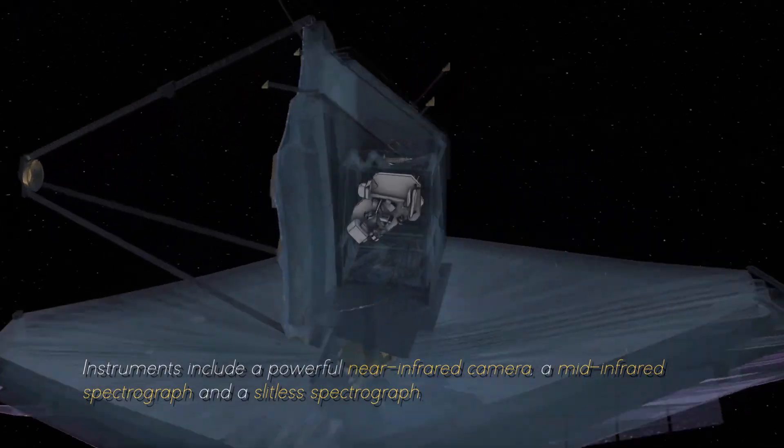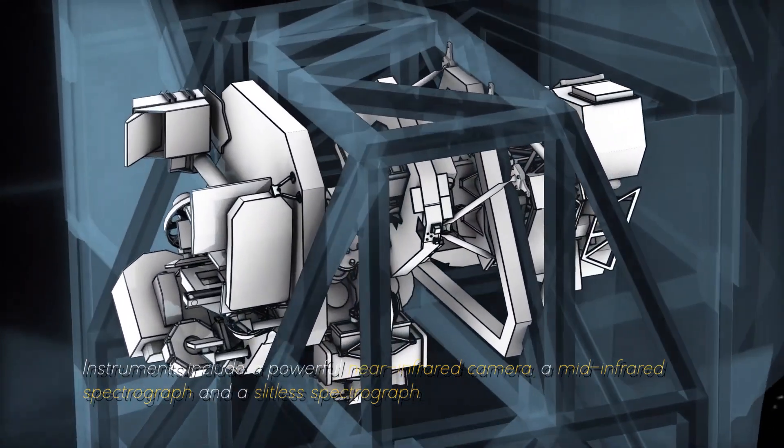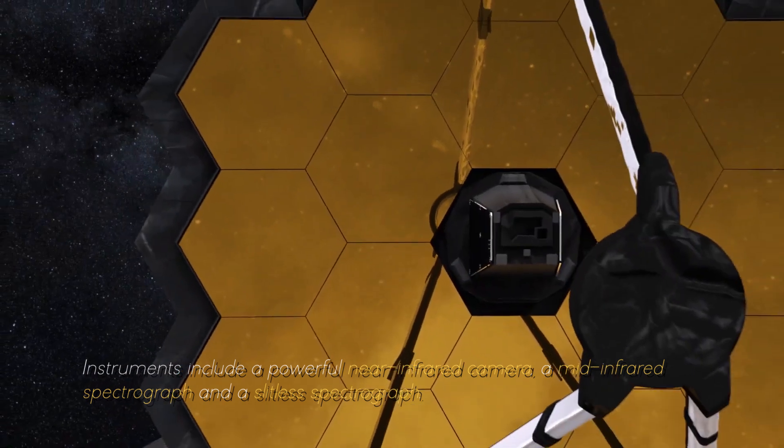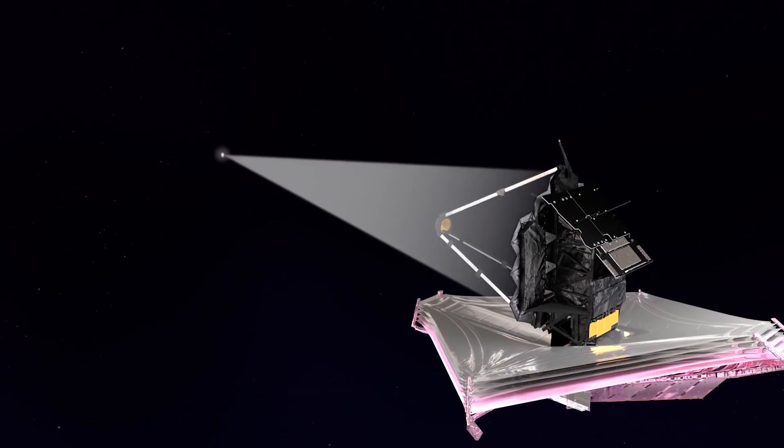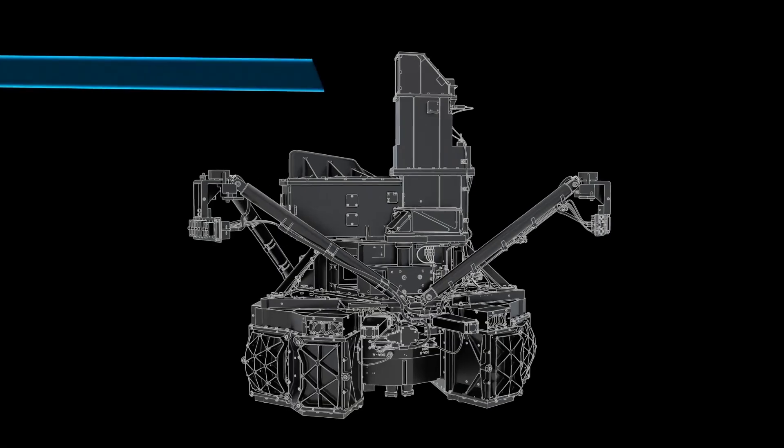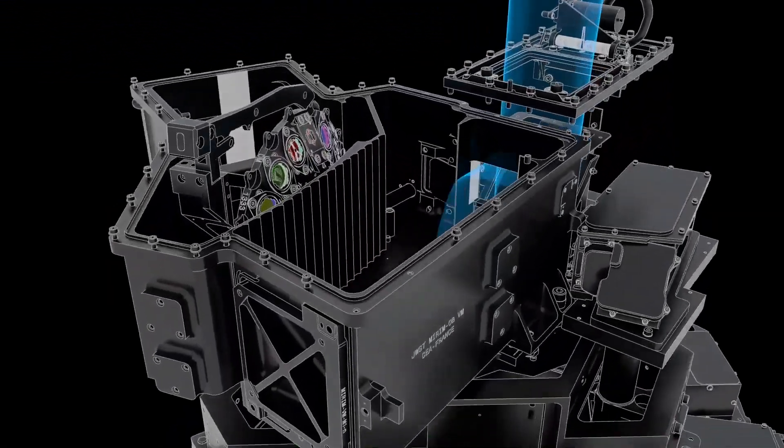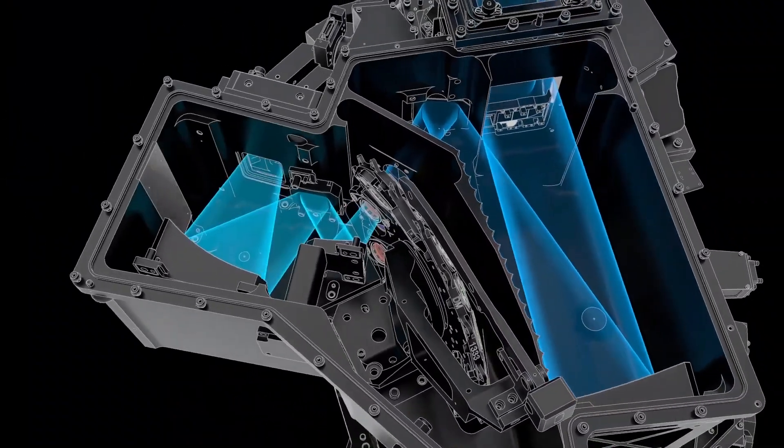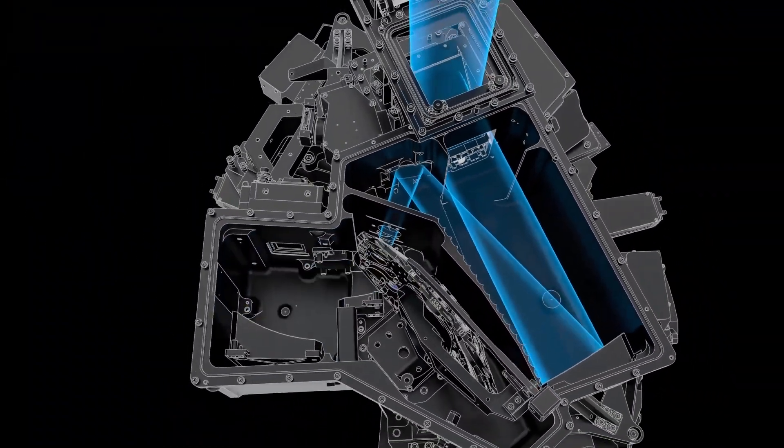This allows the JWST to collect and focus light from distant celestial objects with unmatched precision and sensitivity. Instruments include a powerful near-infrared camera, a mid-infrared spectrograph, and a slitless spectrograph. These instruments work together to capture images, measure spectra, and study the properties of objects ranging from the oldest galaxies to the planets of our solar system.